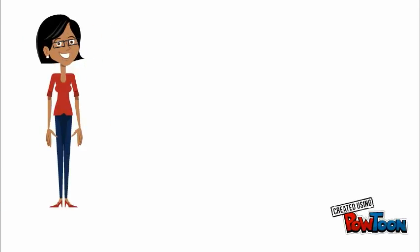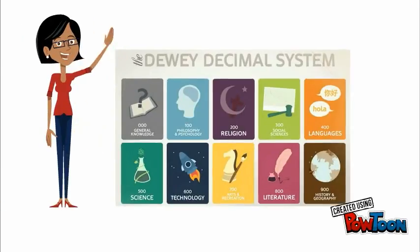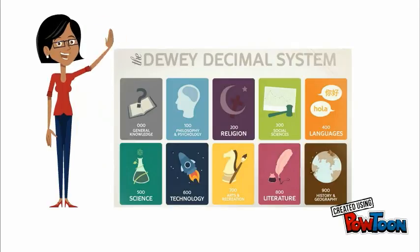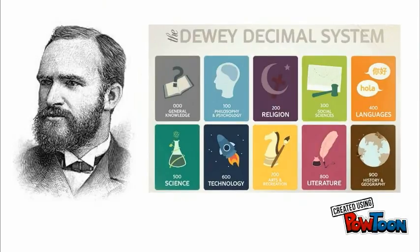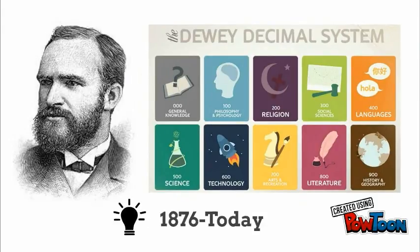Well, have no fear — a librarian is here. I'm going to teach you how the Dewey Decimal System is used to organize our non-fiction books. Melvil Dewey invented the Dewey Decimal System in 1876, and we still use it today. Dewey invented this classification system to organize information according to specific subject areas.